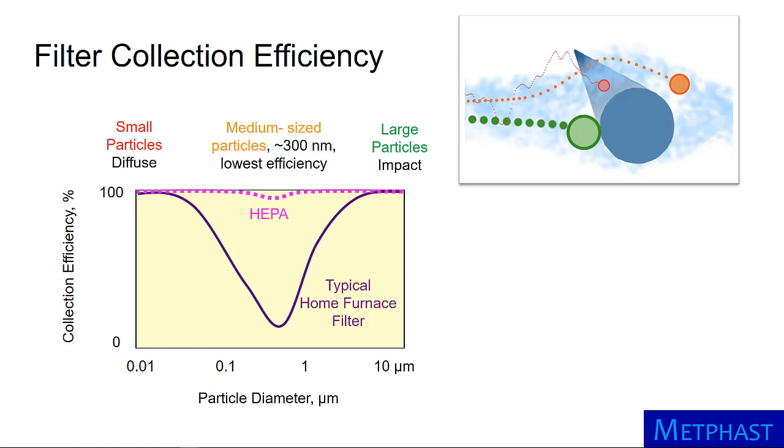However, even for these filters, the lowest collection efficiency occurs for a particle with a diameter of approximately 300 nanometers, a size associated with low diffusion and inertial forces. However, with good design, collection efficiency of a HEPA filter is typically 99% or greater, even for this particle size.